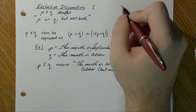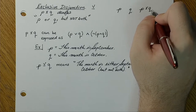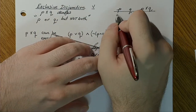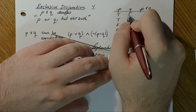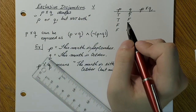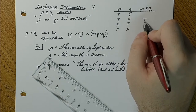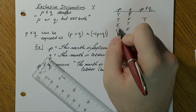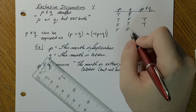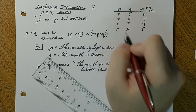For the truth table of the exclusive disjunction, I have P, Q, and P ⊕ Q. It has to be one or the other but not both. True and true gives false. True and false gives true. False and true gives true. False and false gives false.